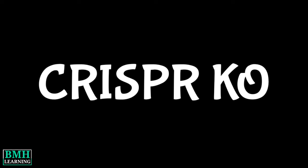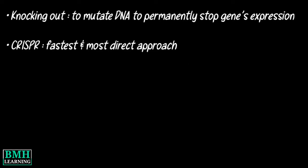Hello friends, welcome to BMH Learning. This video is about CRISPR KO or CRISPR knockout. Knocking out a gene means to mutate the DNA in a way that stops the gene's expression permanently. The fastest and most direct approach to achieve specific gene knockout is to use CRISPR genome editing.